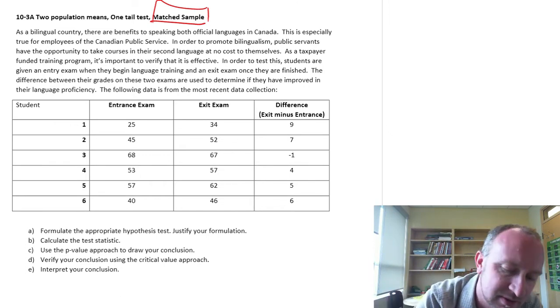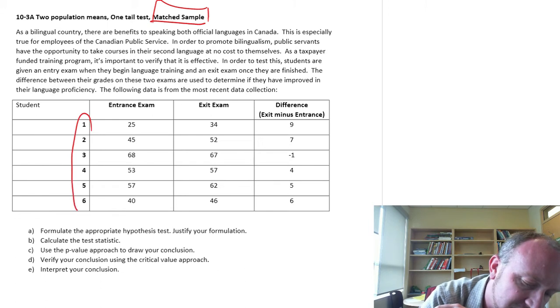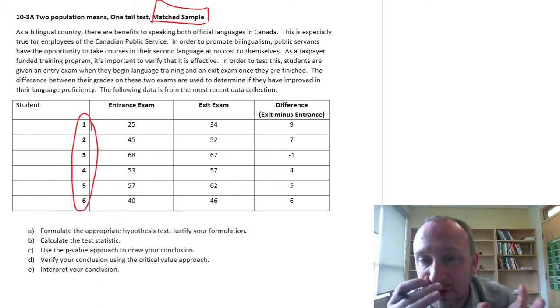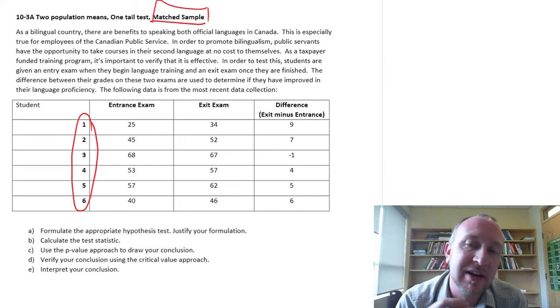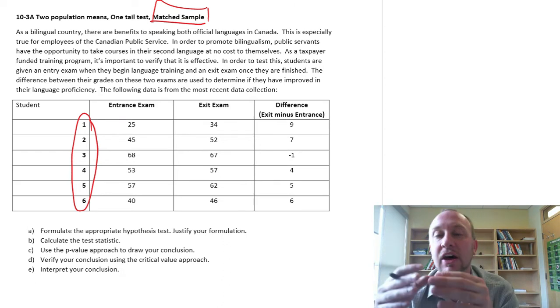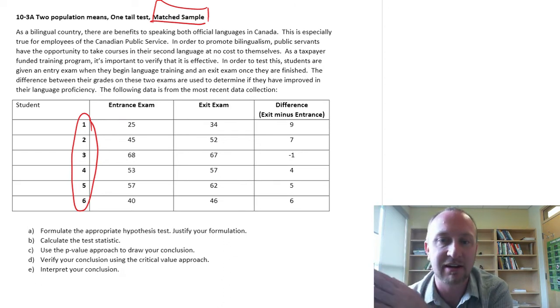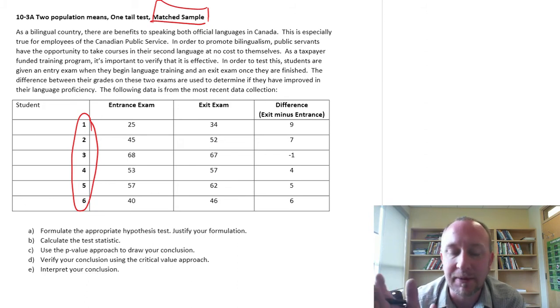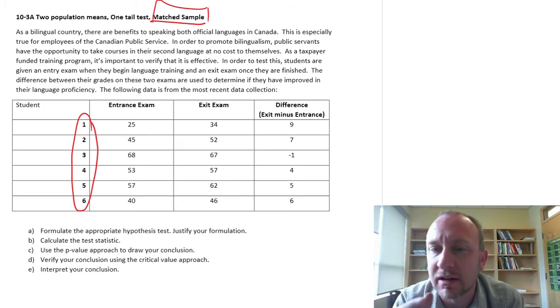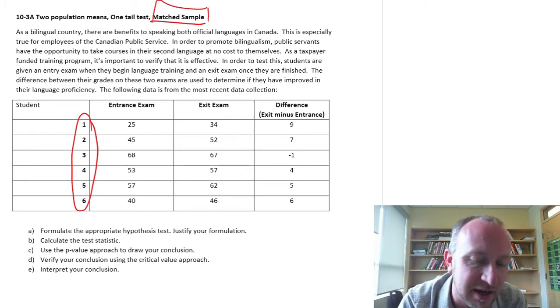In a matched sample, what's different is we have common observational units. So in this case, I'm looking at test scores of the same student at different periods of time. Here I'm tracking those same students over time. We'll go into the exercise here, and I'll explain a little bit more what I mean by that.